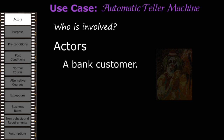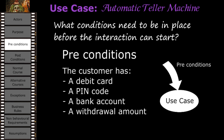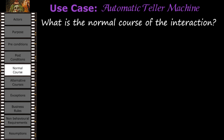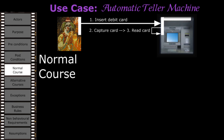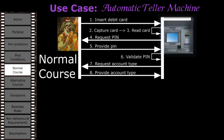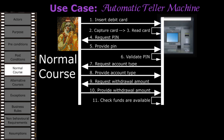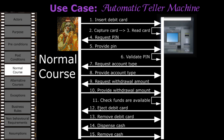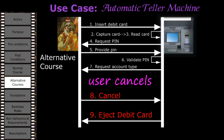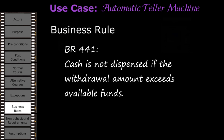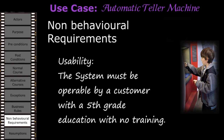Who is involved? What is to be achieved? What conditions need to be in place before the interaction can start? What conditions indicate successful completion? What is the normal course of the interaction? Are there any alternative courses of interaction? What could go wrong? Do any business rules apply? Do any non-behavioural requirements apply? Are we assuming anything?